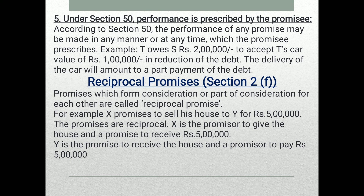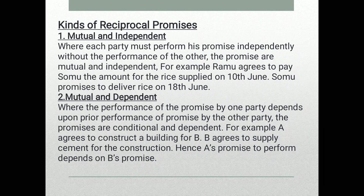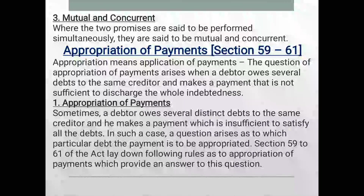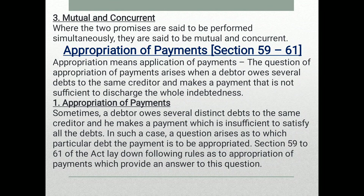Reciprocal promise — a promise which is part of consideration for another promise is called a reciprocal promise. The kinds of reciprocal promise are: mutual and independent, and mutual and dependent. Mutual and independent means the obligations are independent of each other; mutual and dependent means the two obligations are interdependent.